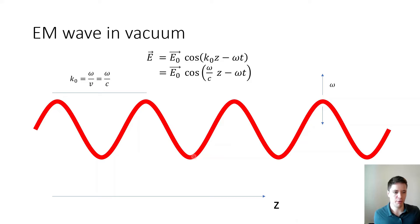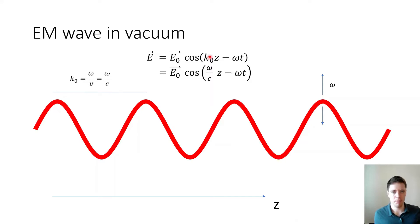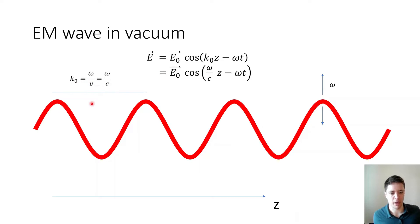To begin, let's consider an electromagnetic wave in vacuum. Mathematically it can be described using an amplitude and a cosine function, where omega indicates the temporal frequency — that is, at a certain location, how many times per second does the electric field wiggle up and down. We also have k0, also called the propagation constant, which is the spatial frequency: at any given instant, if you take a snapshot of the wave and select a certain region of space, how many times does the wave peak inside that region. There is a relationship where k0 equals omega over the propagation speed, which for an EM wave in vacuum is just the speed of light.